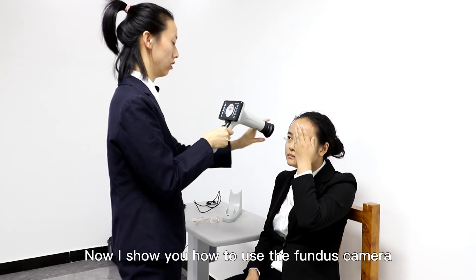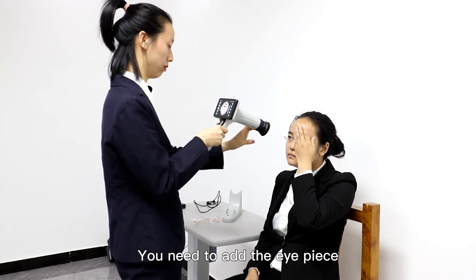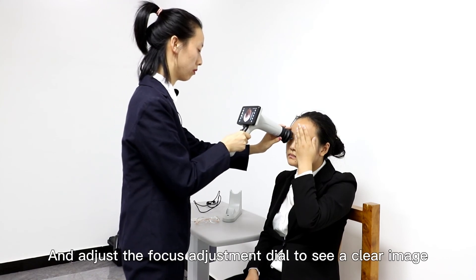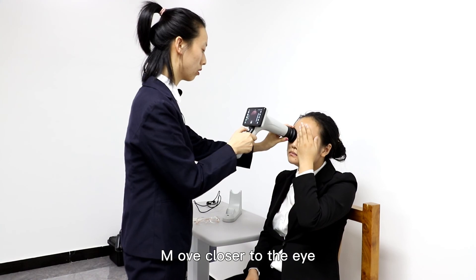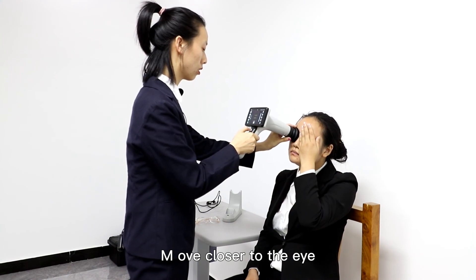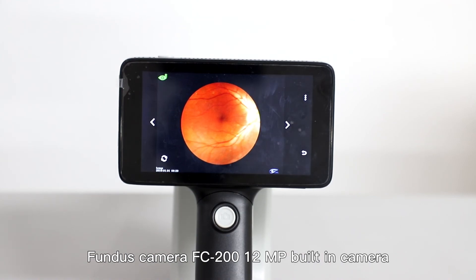Now I'll show you how to use the Fender's camera. Before you use it, add the eyepiece and adjust the focus adjustment dial to see a clear image. Move closer to the eye and press the button to take a picture.